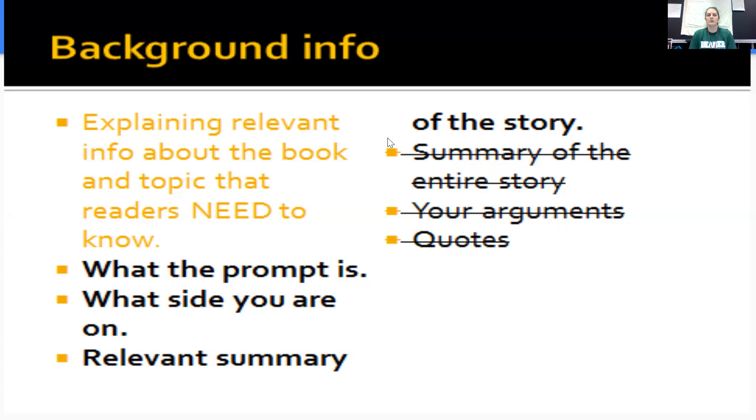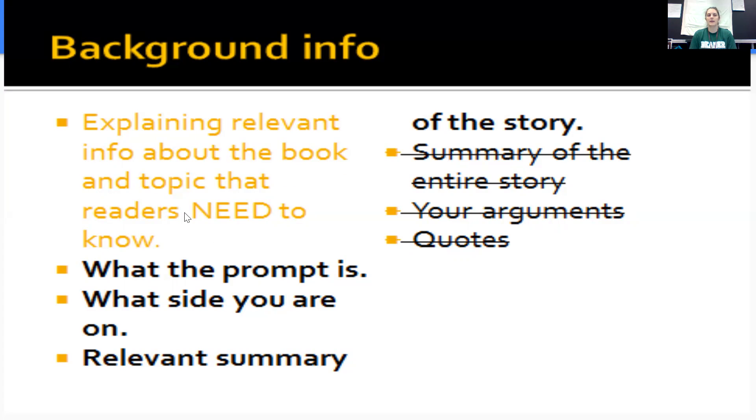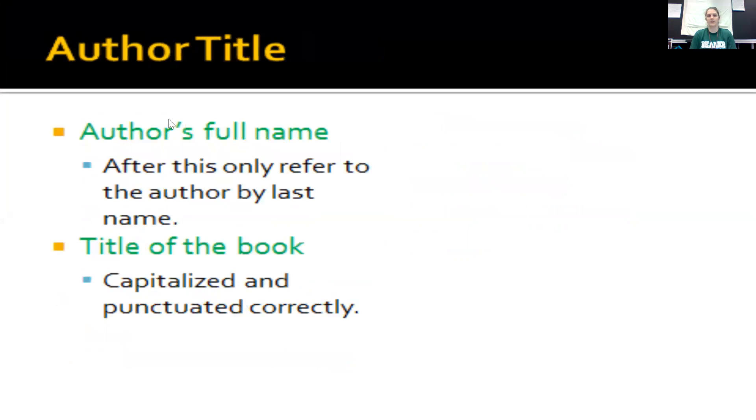Then you want to talk about the author and title. You can combine these sentences like In Snow by Charles Baxter, and then you include the author and title. You want to include the author's full name the first time that you refer to them. After that, you refer to them only by last name.